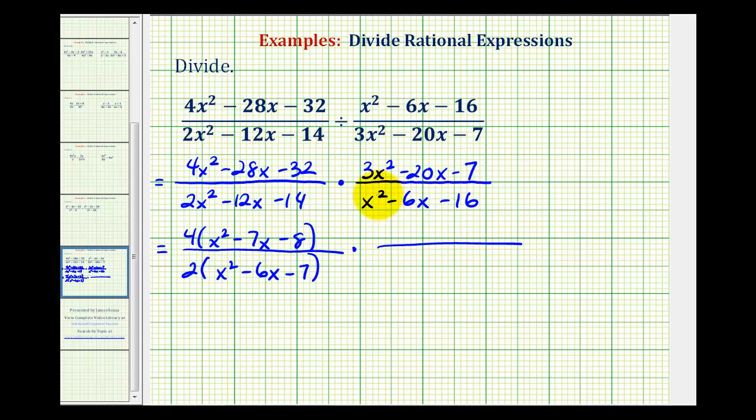Notice here, there are no common factors. So if this factors, it will factor into two binomial factors, where the first terms of our factors must come from 3x squared, which would be 3x and x. And then we want to place the factors of negative 7 into the second positions, so that the sum of the inner product and outer product would be equal to negative 20x. So notice if we put minus 7 here, the outer product would be negative 21x. And if we use a negative 7 here, we have to use a positive 1 here. So negative 21x plus 1x does equal negative 20x. So this is factored correctly.